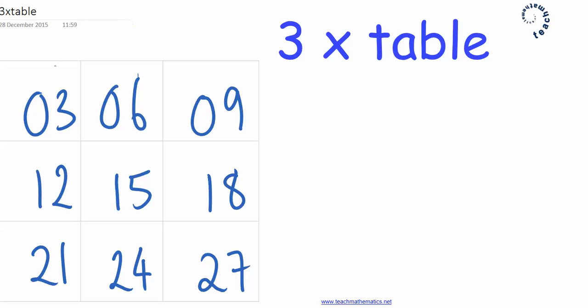That's my nine times table. One times three is three, two times three is six, three times three is nine, all the way up to nine times three in this bottom corner.